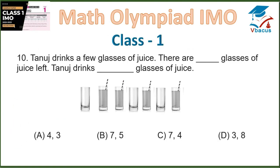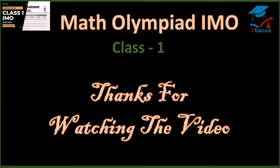Question 10: Tanuj drinks a few glasses of juice. There are dash glasses of juice left. How many glasses of juice are left? 1, 2, 3, 4 — so 4 are left. How many glasses did Tanuj drink? 1, 2, 3 — so 3 drank and 4 left. The answer is 4 and 3, so option A is correct. Thanks for watching the video.